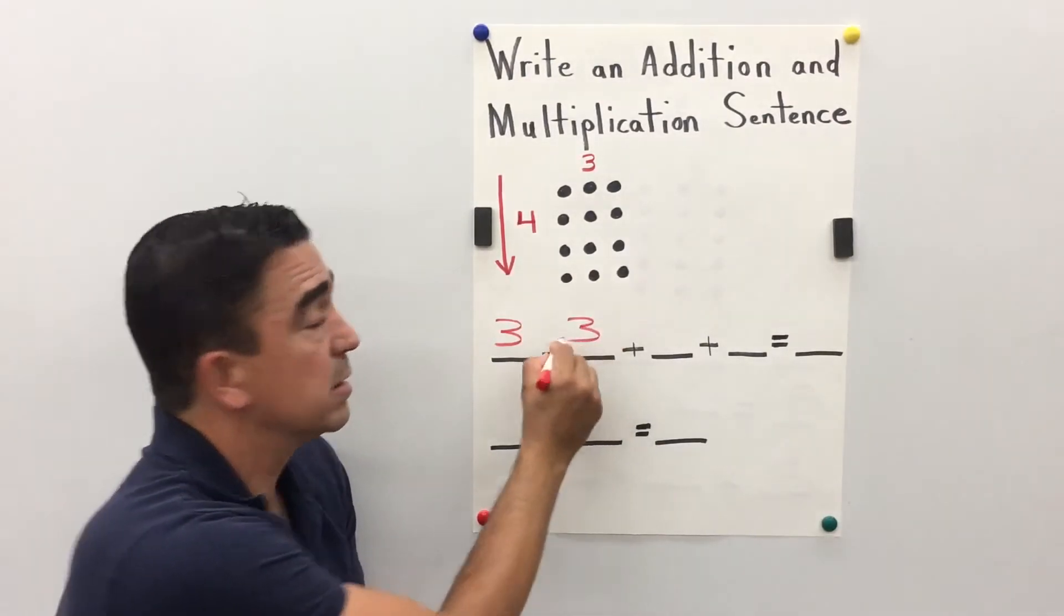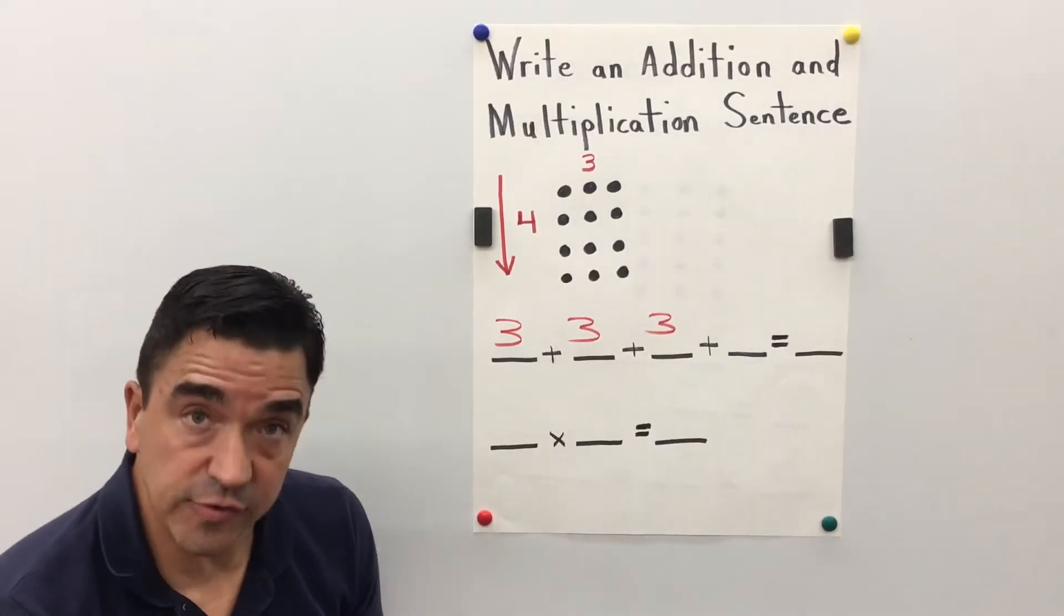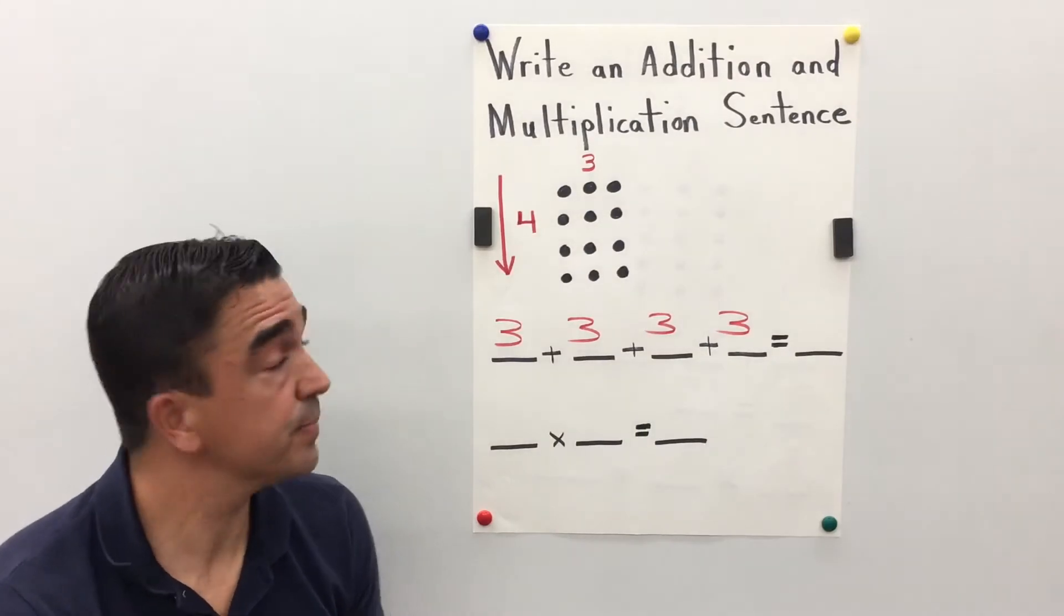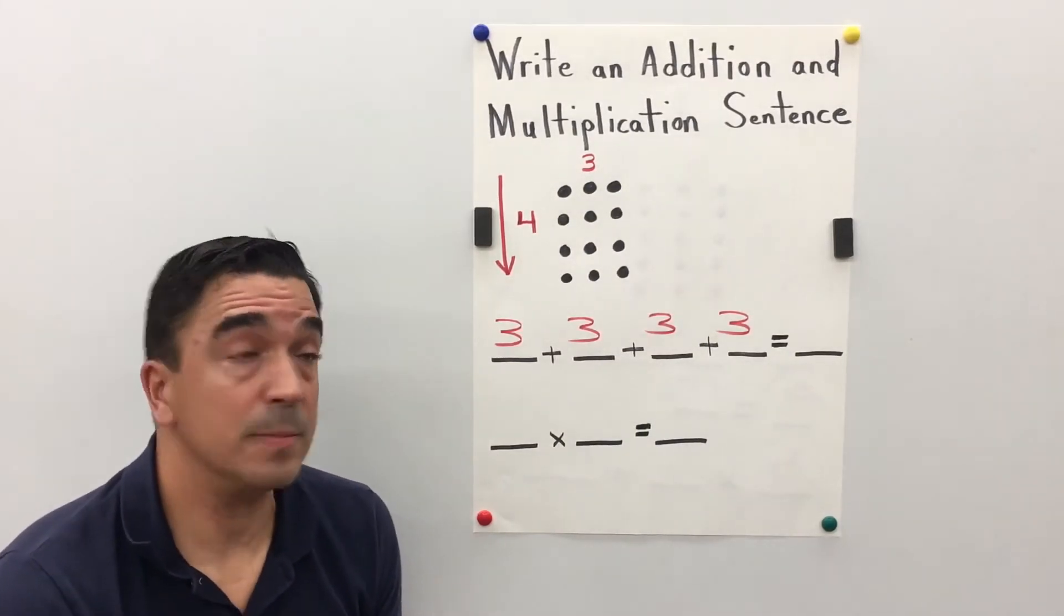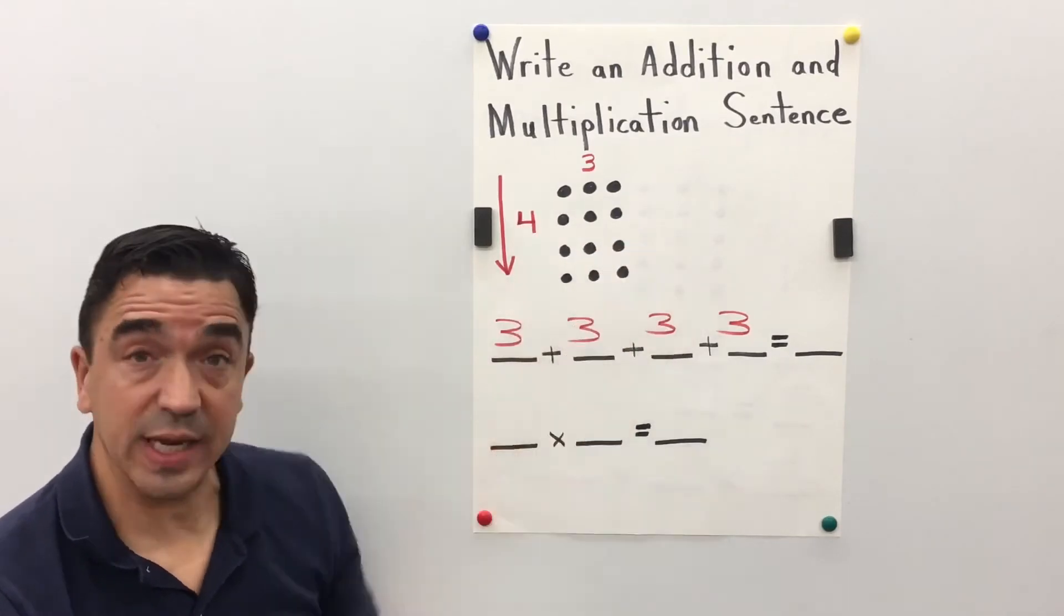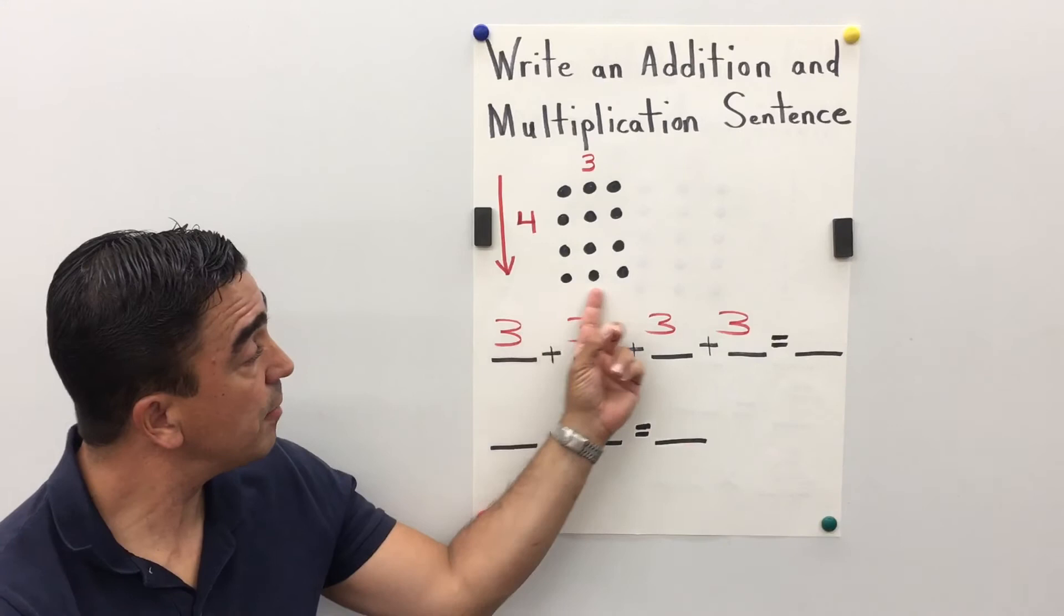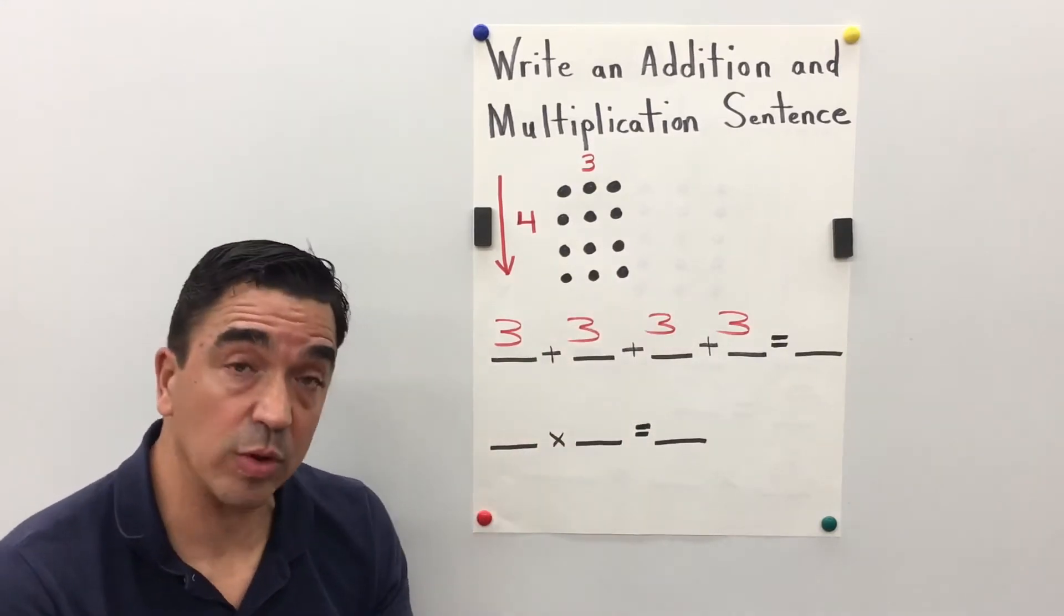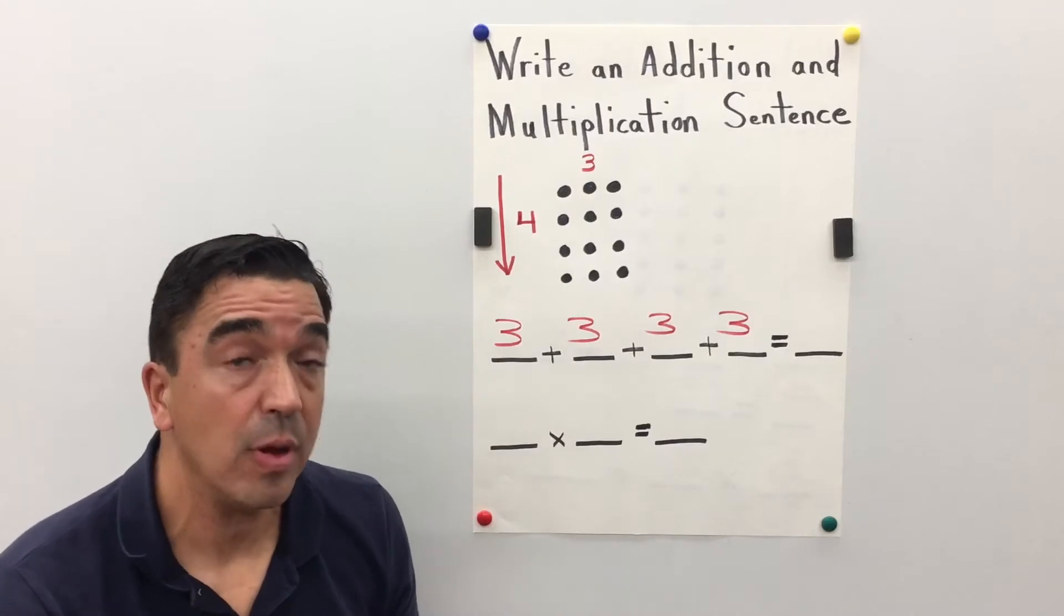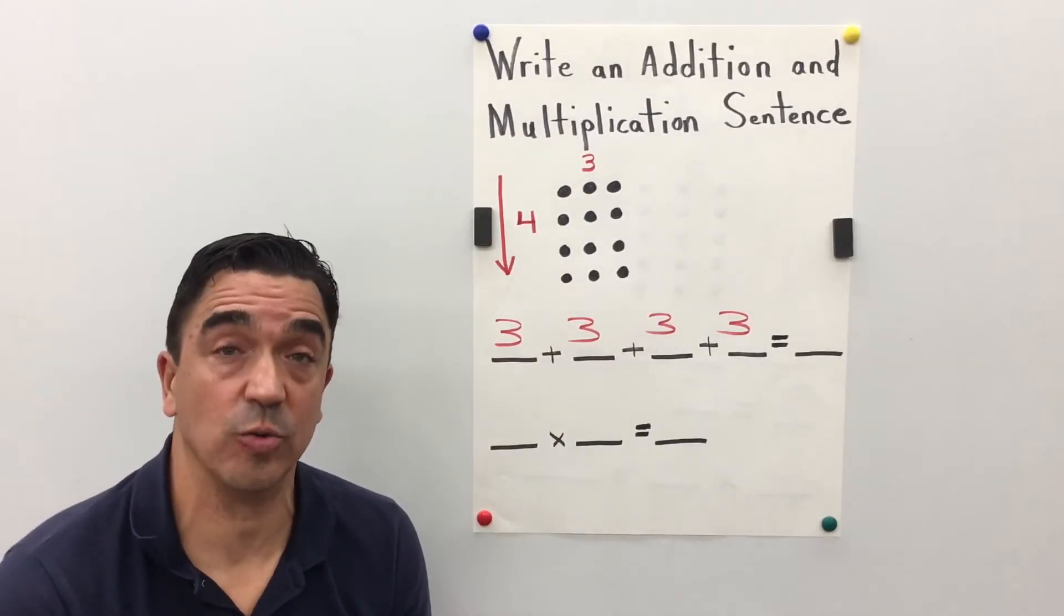Three plus three plus three plus three. Well, three plus three plus three plus three equals... I can either add them up or I can count the counters in the array.